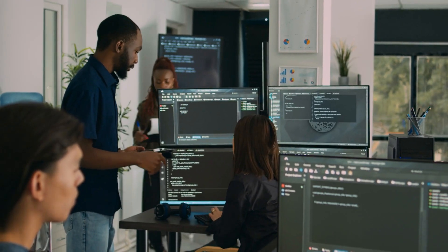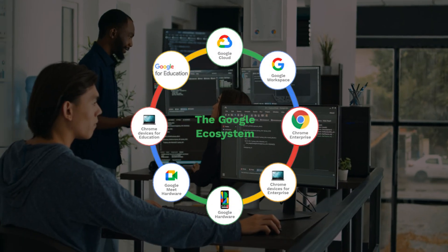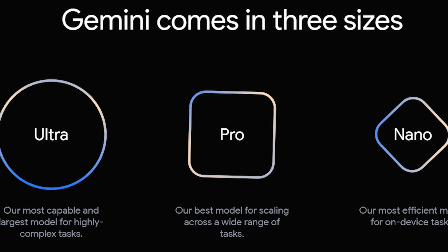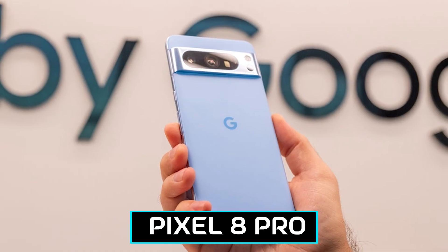But Gemini's impact isn't confined to laboratories and tech companies. It's making its way into our daily lives through integration into Google's ecosystem. Gemini Pro is now the power behind Bard, and Gemini Nano is bringing new features to the Pixel 8 Pro smartphone.